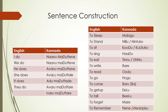How are we going to make a sentence? Very simple. For example: Naanu Maduttene — I will replace Madu with Malagu. So the sentence Naanu Malaguttene means 'I sleep.' 'I stand' — Naanu Nilluttene, or Naanu Nintukolluttene. Naanu Kuduttene — 'I sit.' Naanu Haaduttene — 'I sing.' For 'we do' — Naanu Madutteve. 'We sing' — Naavu Haadutteve. 'We eat' — Naavu Tinnutteve, or Naavu Unnutteve.